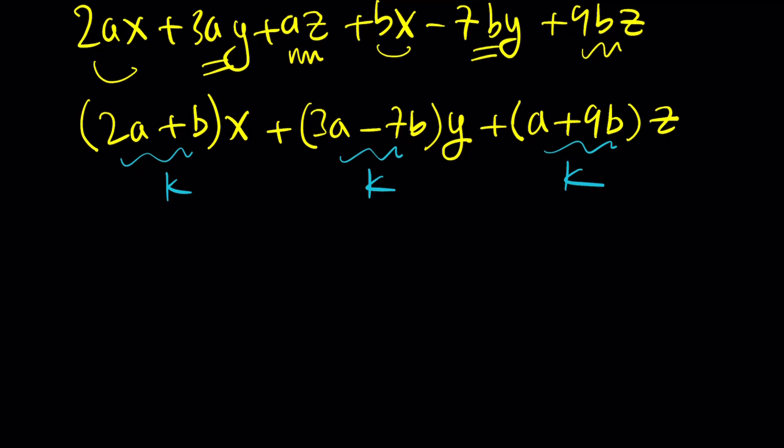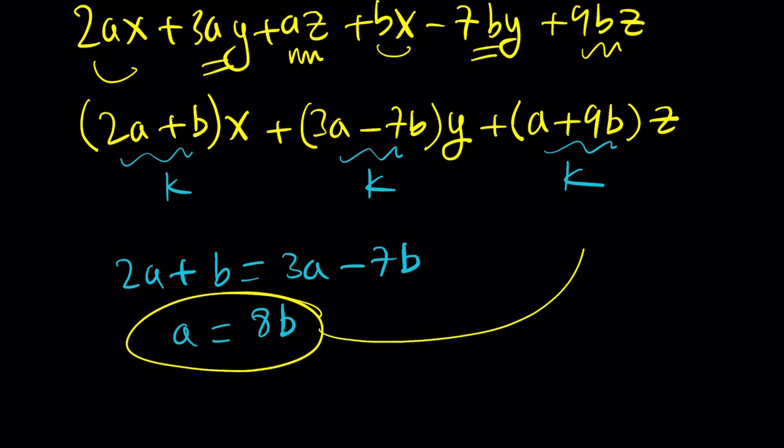So here's what I'm going to do then. Since these three coefficients are equal, I'm going to set the first two equal to each other. 2a plus b equals 3a minus 7b. And from here, you get a equals 8b. Awesome. So that kind of gives us a relationship between the two. But what about the third one? Is that going to work on that one?